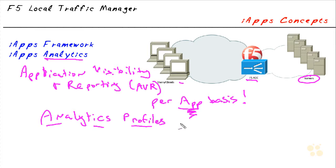You can create custom profiles, or get either the same or wildly different information about each different virtual server. Each virtual server can have one and only one analytics profile tied to it — that's the only catch. But you can vary them depending on the application, since each app is a different virtual server anyway. That AVR module must be licensed and have resources provisioned in order to actually work.